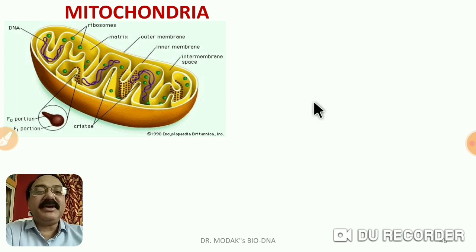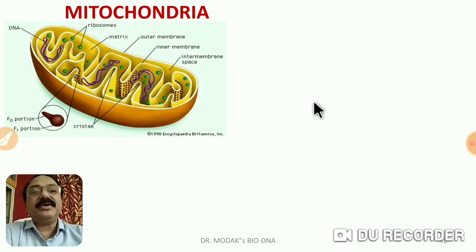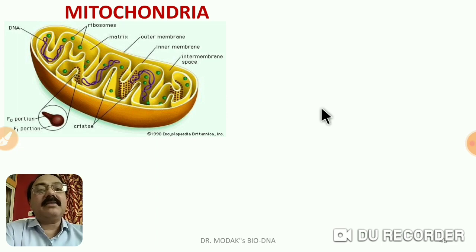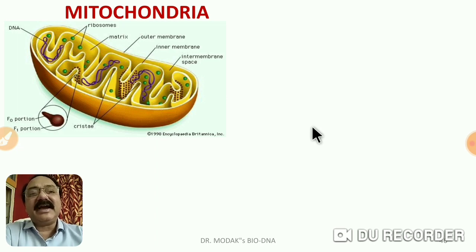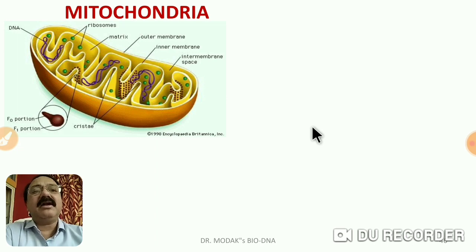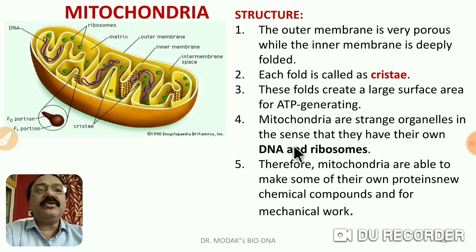Mitochondrion is a cell organelle specially present in eukaryotic cells only — it means it is absent in prokaryotic cells. It is ultramicroscopic and can be observed under an electron microscope only. The number may be variable; they are more in physiologically active cells and less in physiologically less active cells. Their shapes vary — sometimes spherical, filamentous, or donut-shaped — and therefore they are said to be polymorphic.